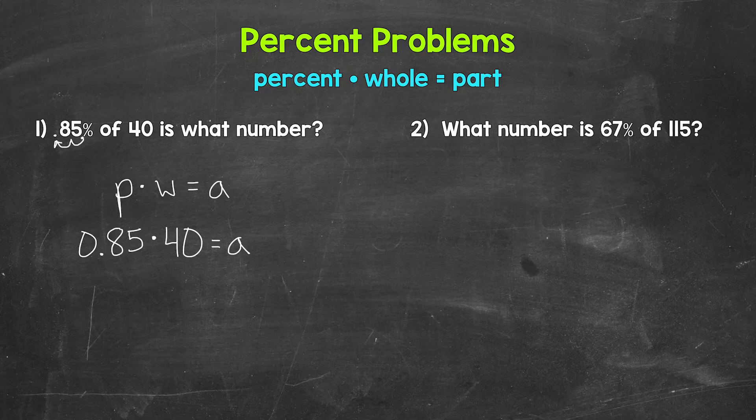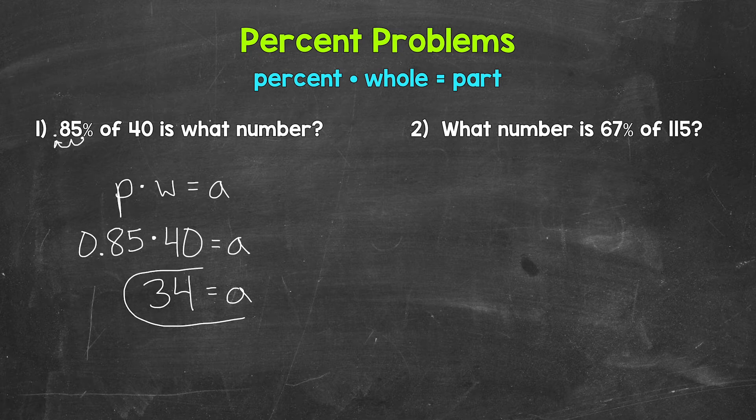And now we solve. Our variable a is already isolated on the right side of the equation. So all we need to do is multiply on the left side. So we have 85 hundredths times 40. That gives us 34. So a equals 34.